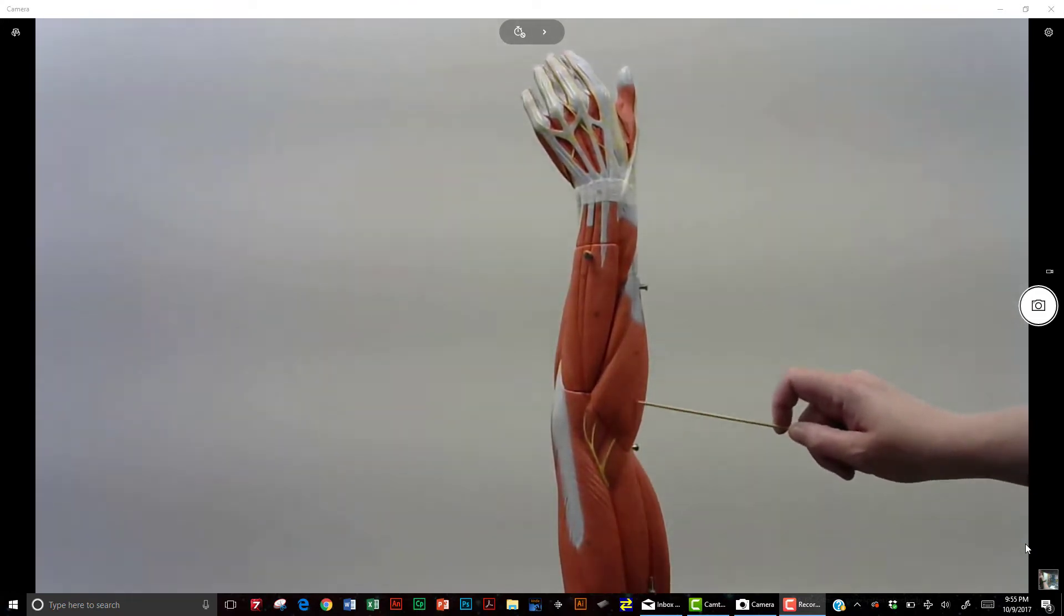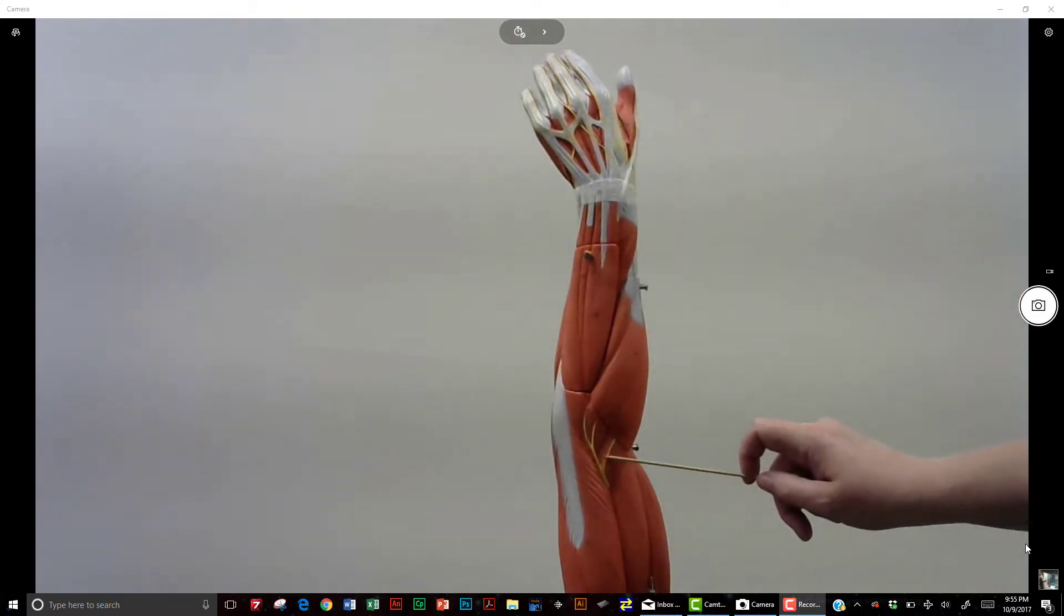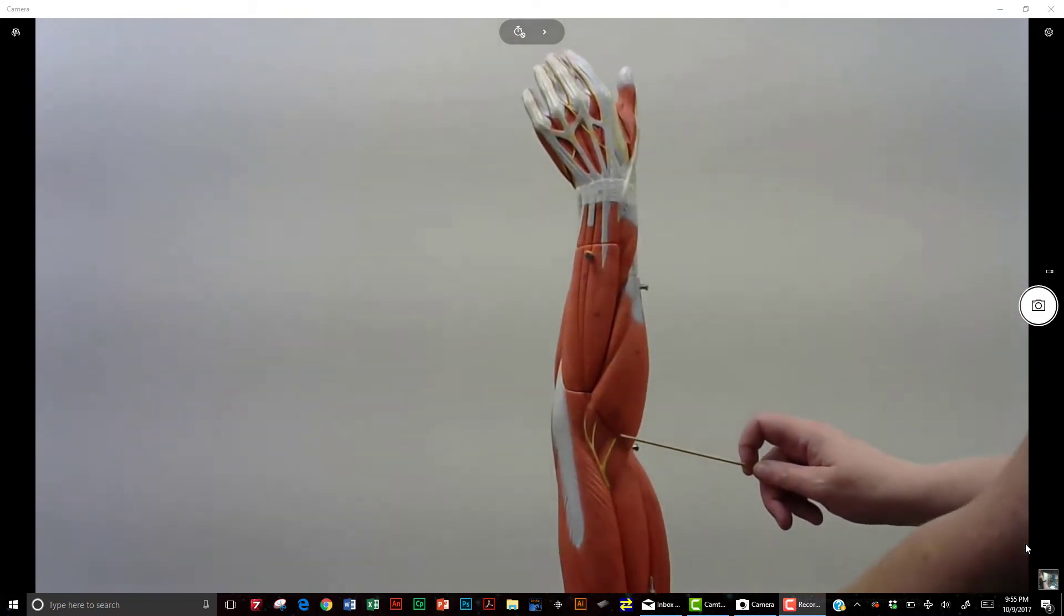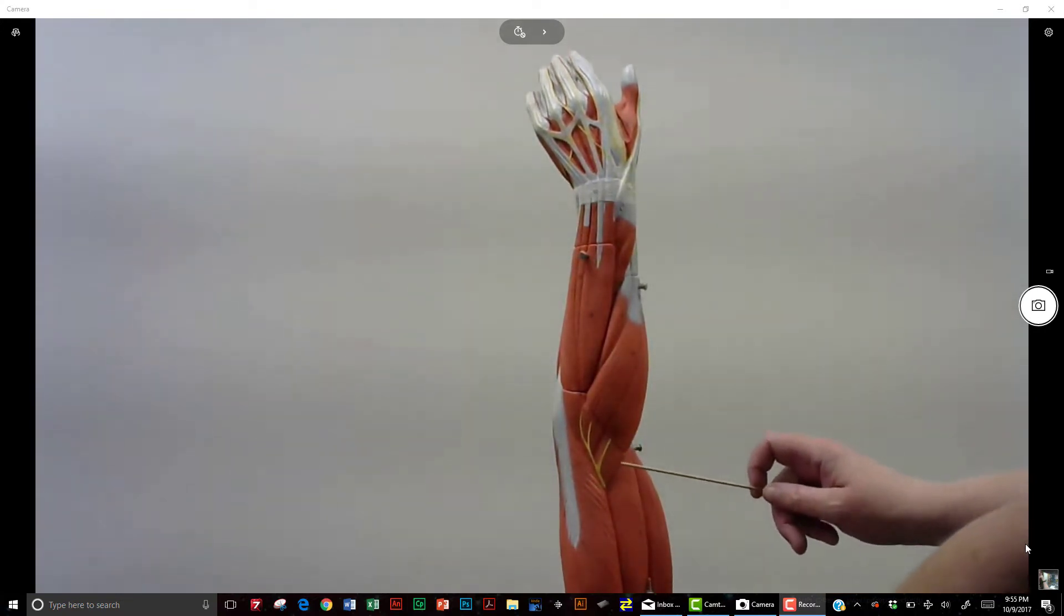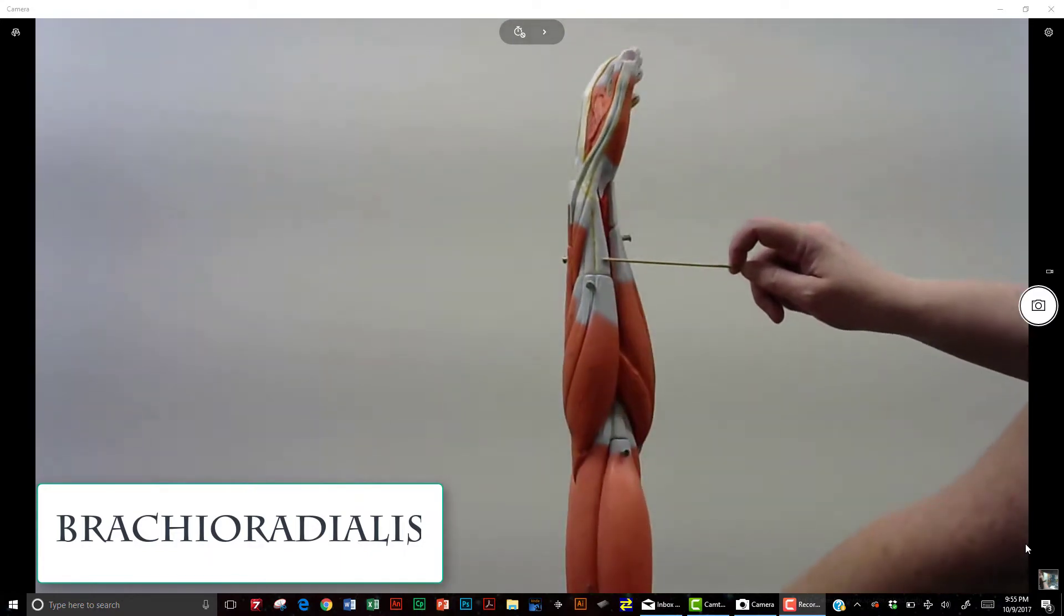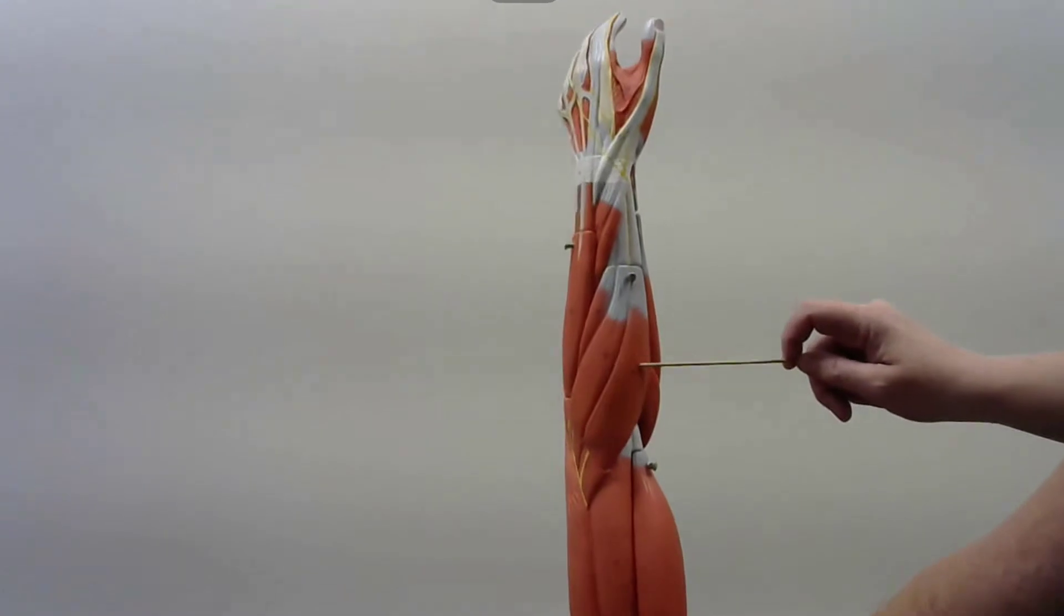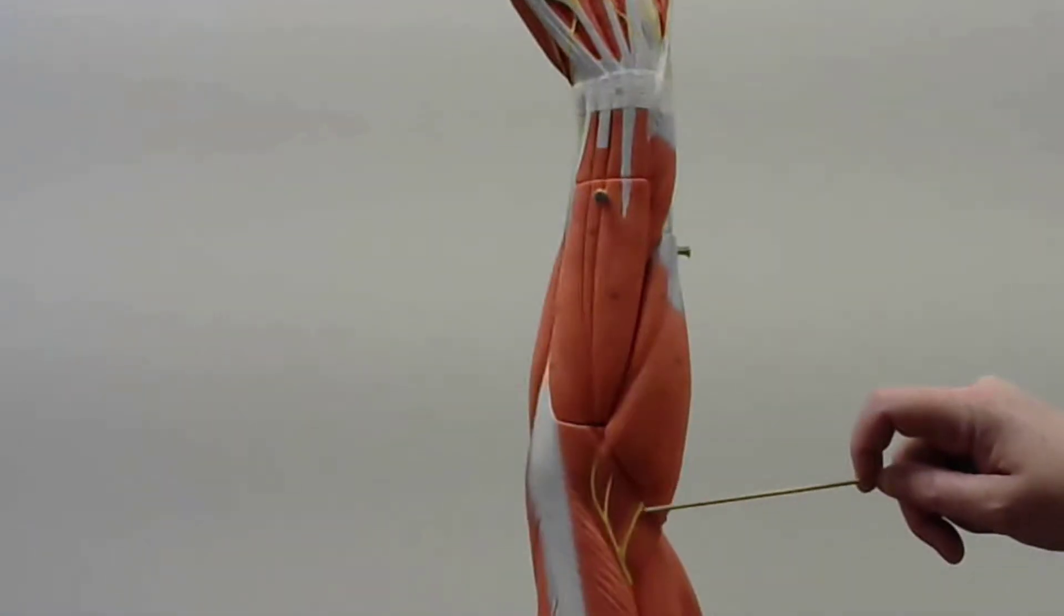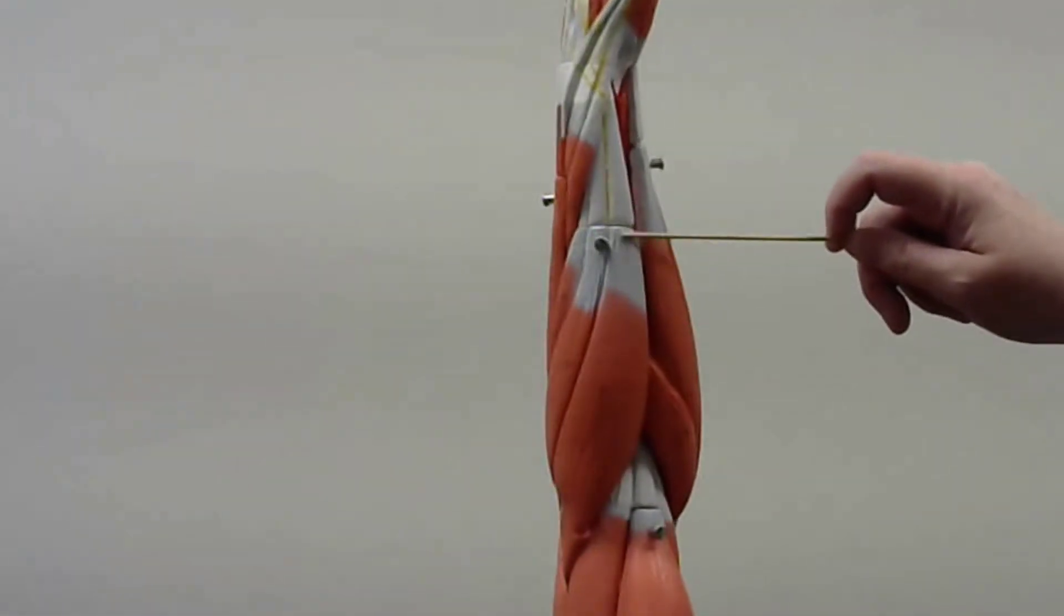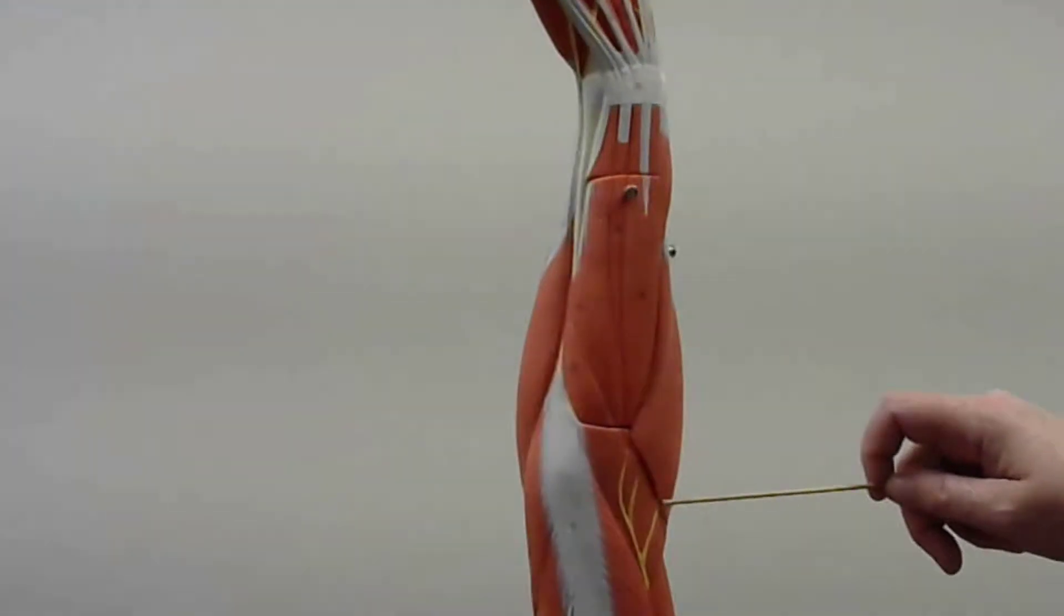This one that is more on the side of the thumb—if I follow this, it's going to point me directly to the brachioradialis. Now the brachioradialis, if I follow that, is going to go like this. Remember, radialis means thumb side, so this is the brachioradialis.